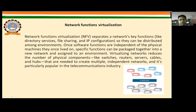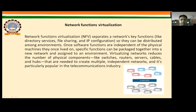The next type is network function virtualization, or NFV. NFV separates a network's key functions so that they can be distributed among environments. Once software functions are independent of the physical machine they once lived on, specific functions can be packaged together into a new network and assigned to an environment. Virtualizing networks reduces the number of physical components — such as switches, routers, servers, cables, and hubs — that are needed to create multiple independent networks. It is particularly popular in the telecommunications industry.